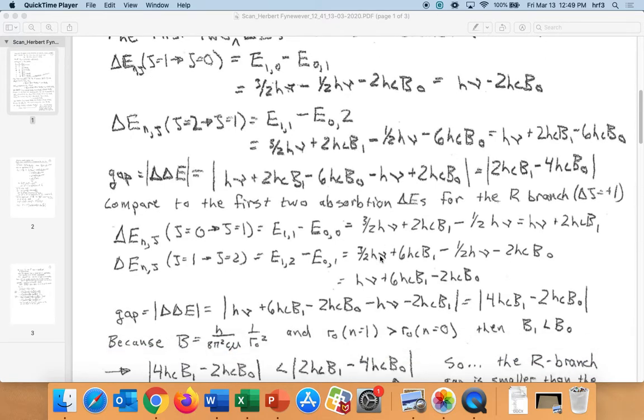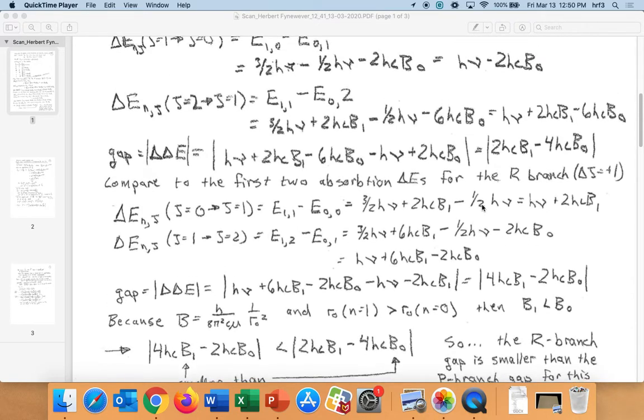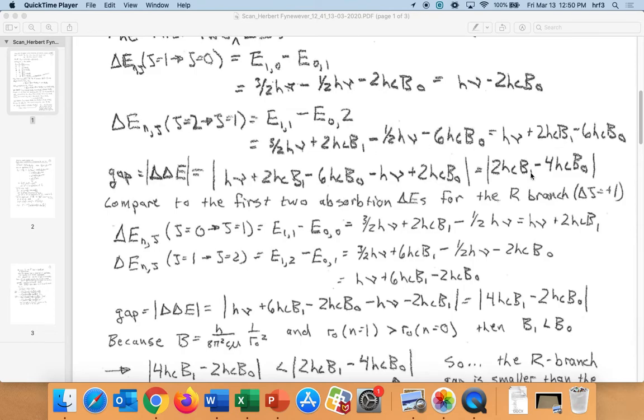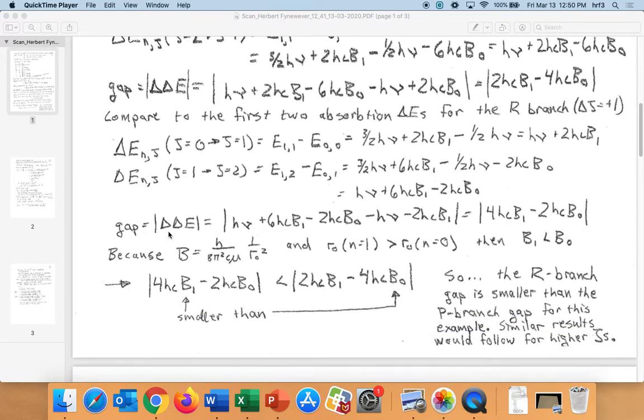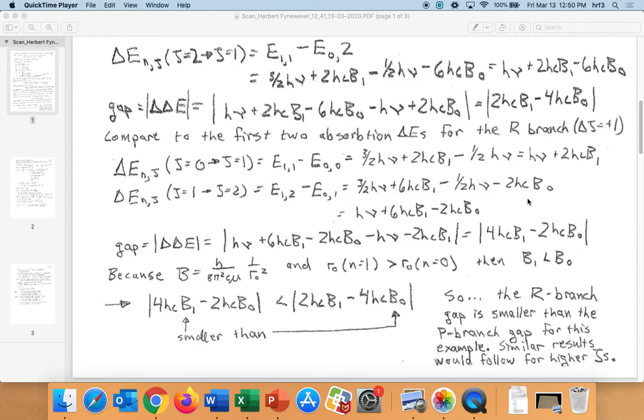Now we could also look at the same exact thing but for the R branch. So we're getting excited rotationally. It's going to be very similar, except now where up here we have b0s and b1s in certain positions, now our b1s and b0s are in different positions. When we look at our gap ΔΔE and do that same subtraction, we get this quantity. If you look at the two quantities, the only difference is the 4hcB term was on the b1 for the R branch and on the b0 for the P branch. The 2hcB is on the b0 for the R branch and it was on the b1 for the P branch.